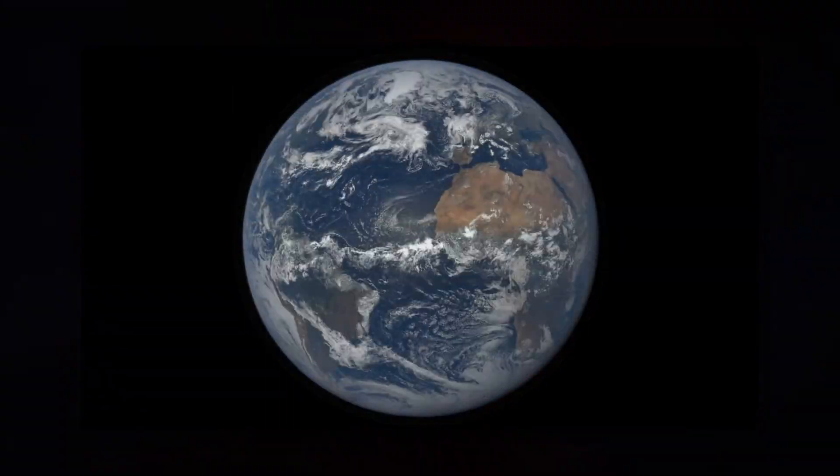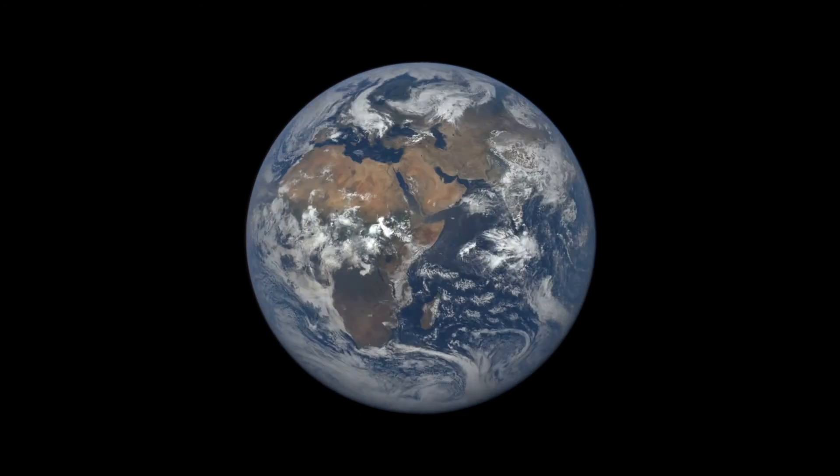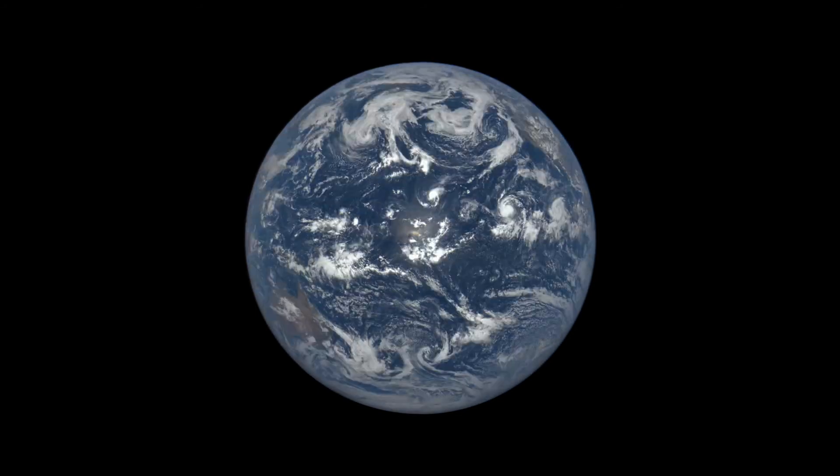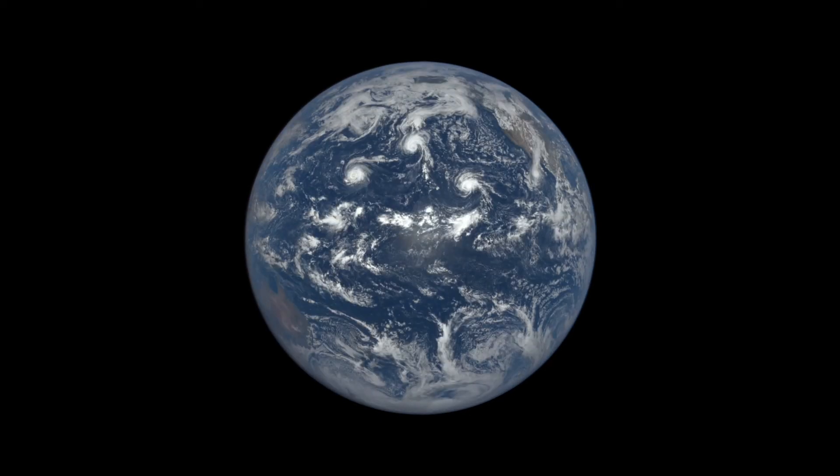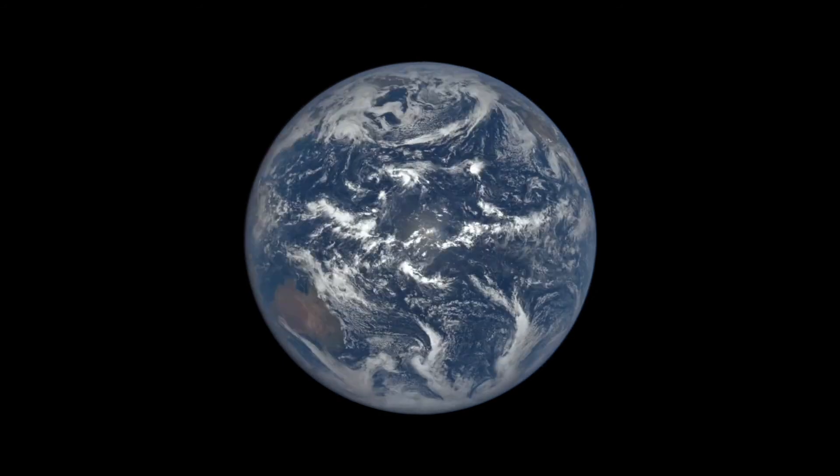NASA's DSCOVR satellite is in a sun-synchronous orbit, so it is always facing the sunlit side of the Earth. It takes a picture every two hours, and when these are combined they produce a video of our beautiful and very definitely spherical planet in motion.